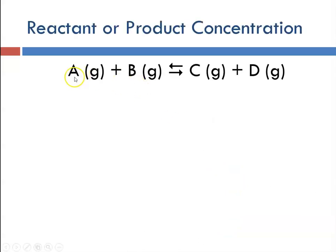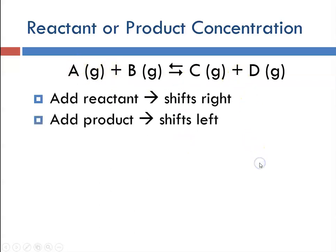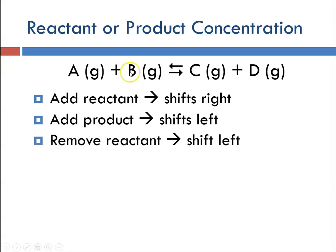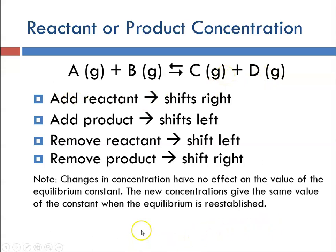So if we have the reaction A + B → C + D, all in the gas phase: adding reactant will shift things to the right to form products. Adding product would shift it back to the left to produce more of the reactants. Removing reactant will shift it to the left to form more reactant, and removing product would result in it shifting toward the product direction. Note that changes in concentration have no effect on the value of the equilibrium constant.